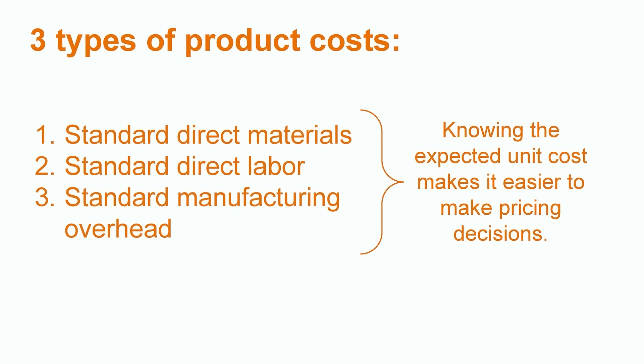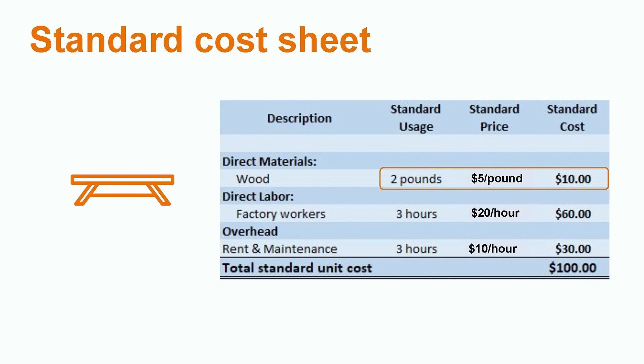Now that we have a better understanding of how standard costs work, let's talk about standard product costing. Companies that use the standard costing system assign costs to products using quantity and price standards. When developing standard costs, manufacturing companies must take into account all three types of product costs, which include standard direct materials, standard direct labor, and standard manufacturing overhead. This allows them to come up with an expected unit cost for each product they produce, which makes it easier to make pricing decisions. Companies use a standard cost sheet, which has all of the data necessary to come up with a standard cost per unit. Going back to the wood table example, we calculated the direct material standard cost by factoring two pounds of wood per table times a price of $5 per pound of wood, giving us a total standard materials cost of $10 for each table.